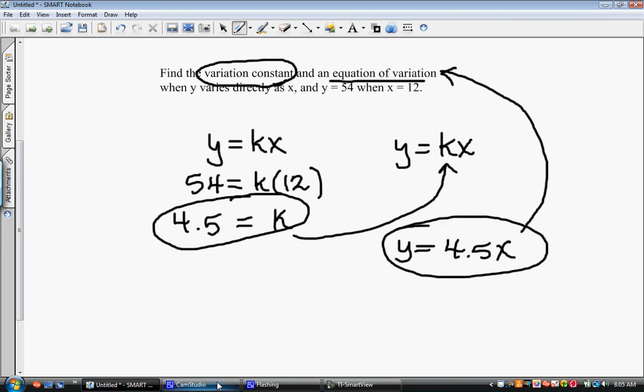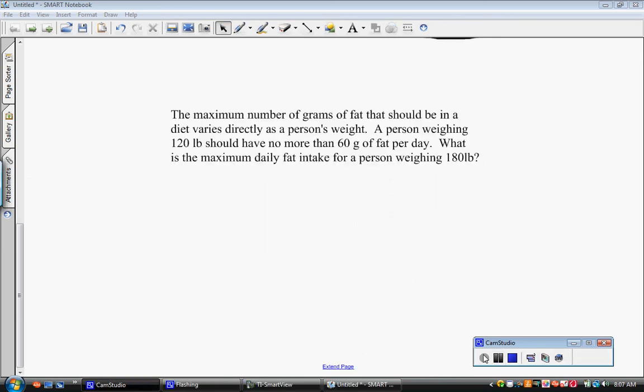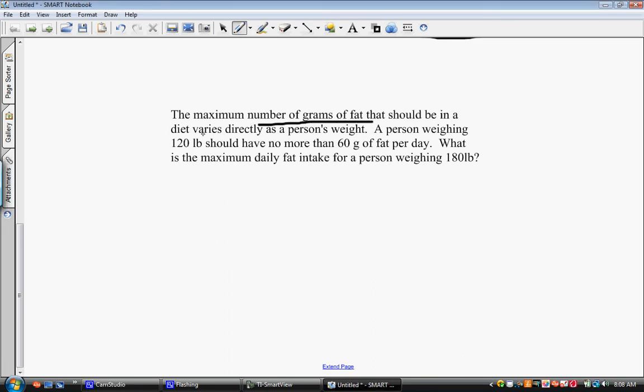Now, here we see an actual application problem involving direct variation. It says the maximum number of grams of fat that should be in a diet varies directly, there's our key phrase there, varies directly as a person's weight. So we have to figure out the two things that are varying directly. It says the number of grams of fat that should be in a diet varies directly as a person's weight. So if we're going to use our template equation, we have to figure out what goes in place of those things there.